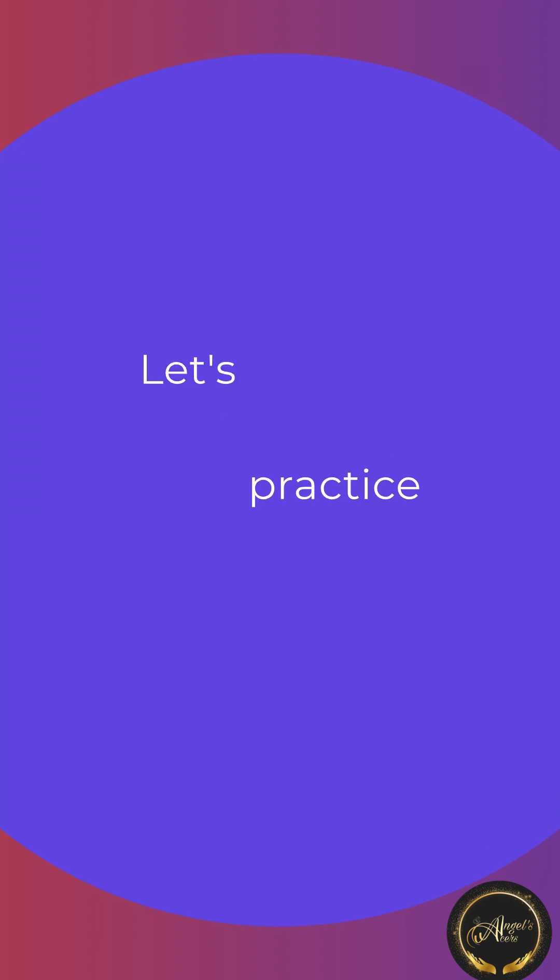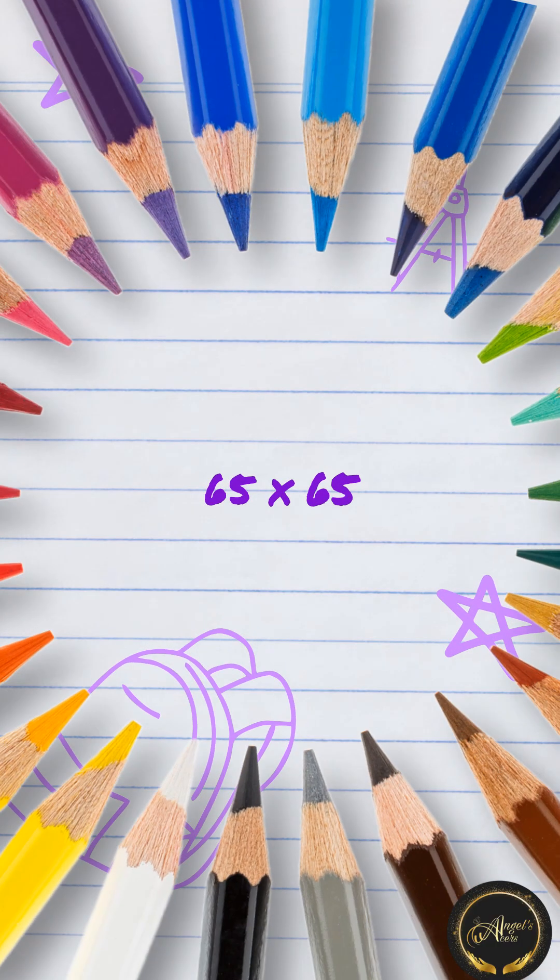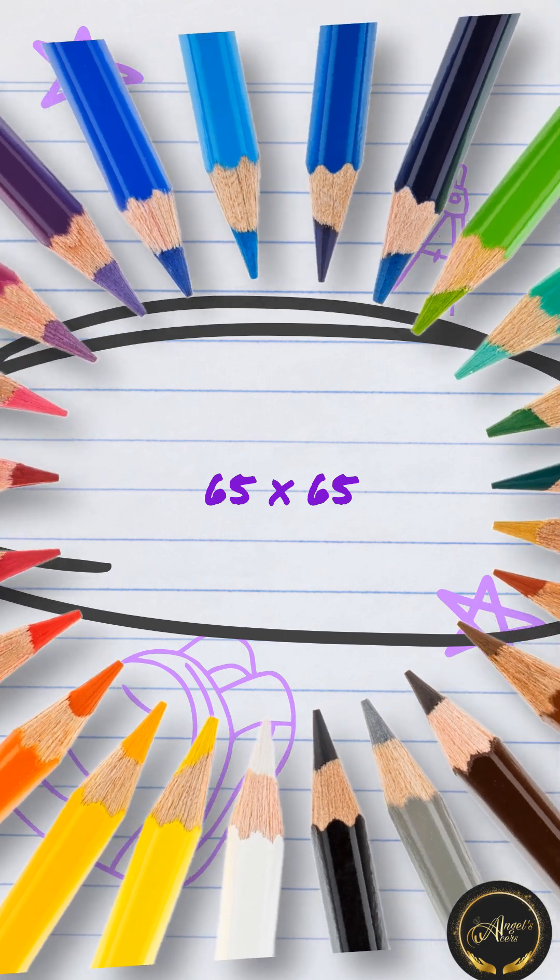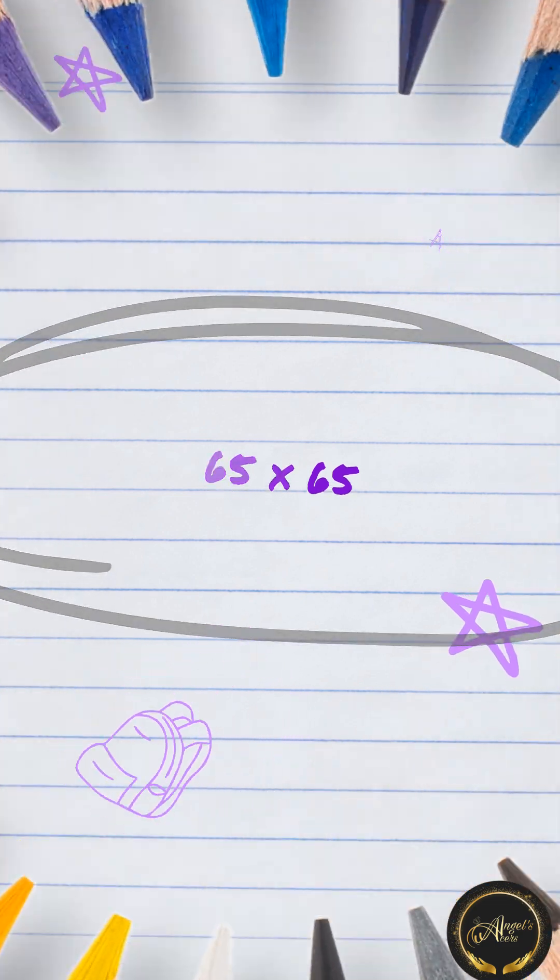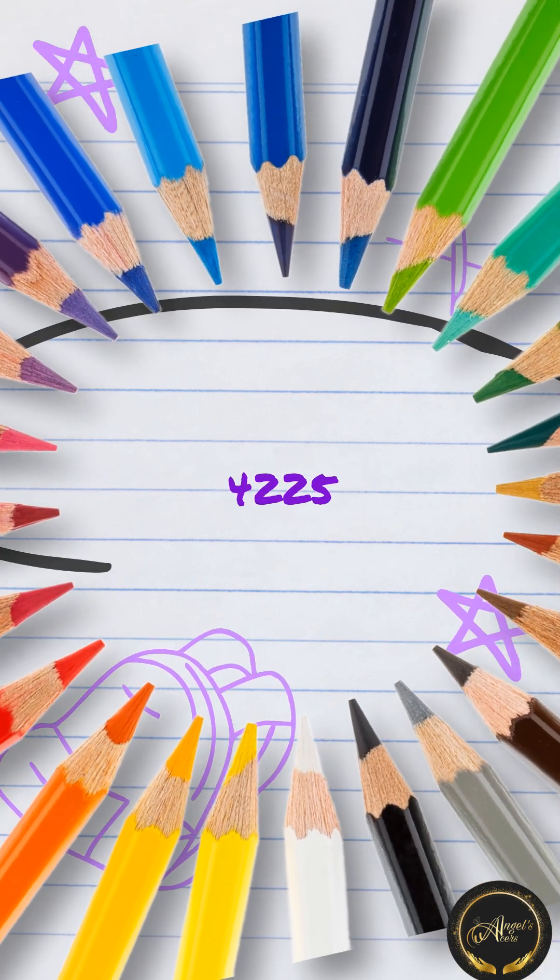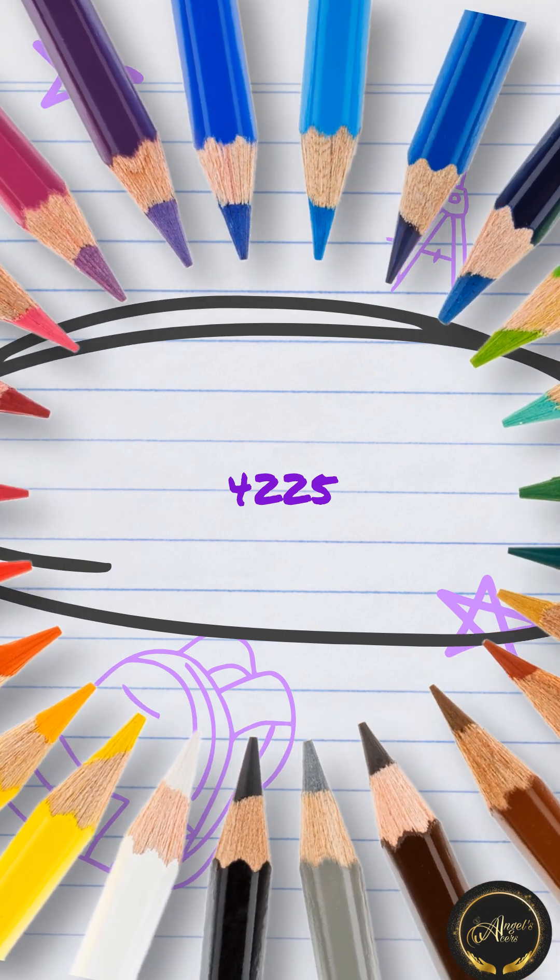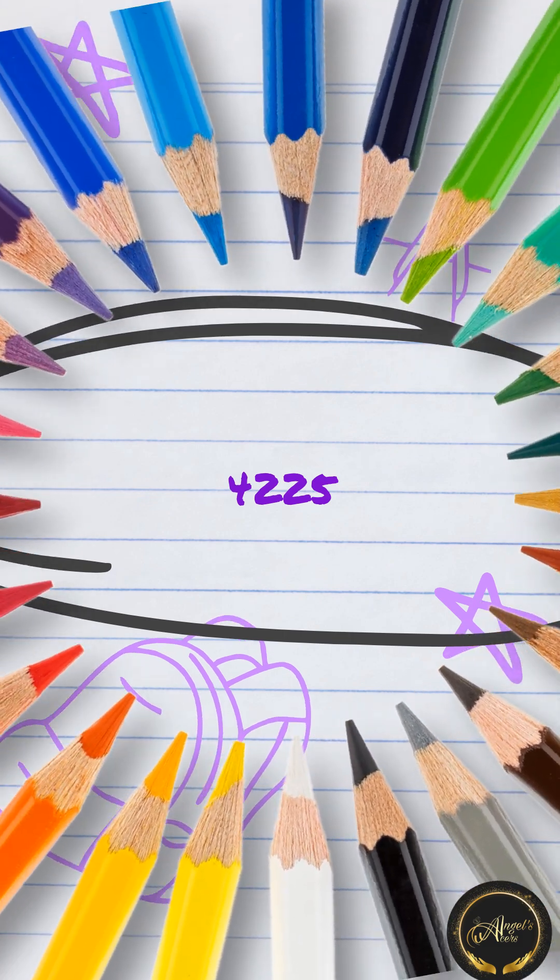Time to practice. Square of 65 is 3, 2, 1... 6 times 7 which is 42, and then put 25 at the end.